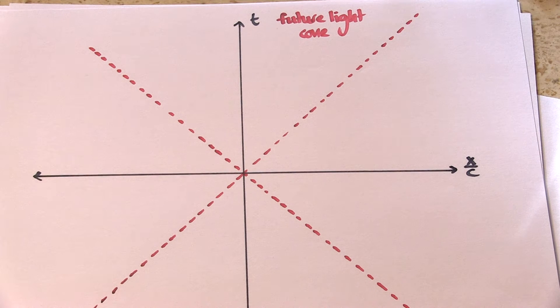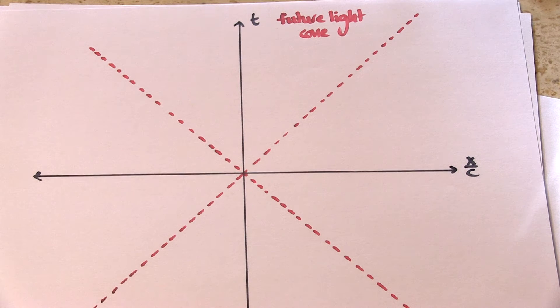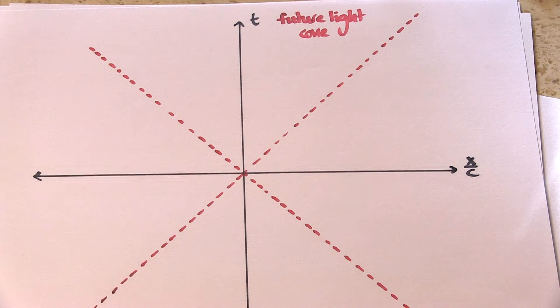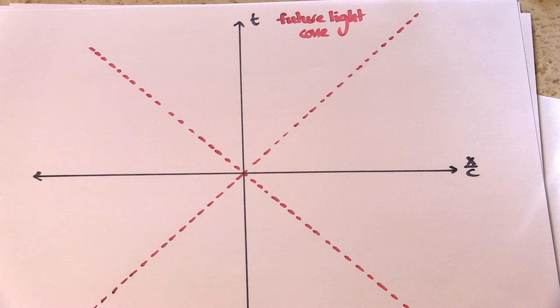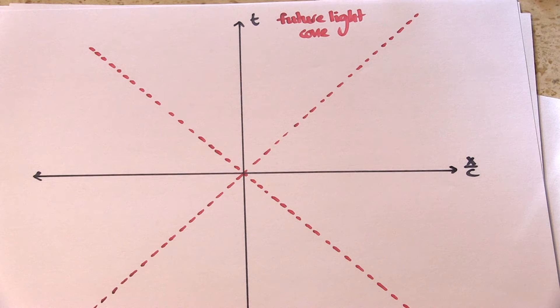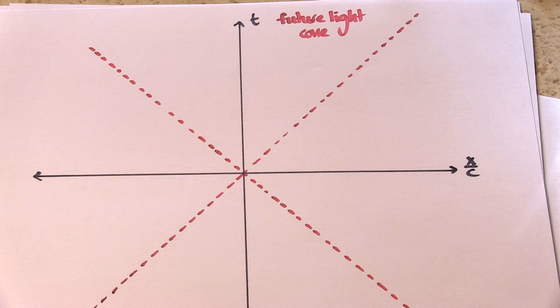We're going to start with a space-time diagram. I wish I had time to explain what that is but believe me I've tried and if I did the video would be twice as long. I'm standing at the origin of the space-time diagram and two light rays, one travelling left to right and the other right to left, whiz by me.